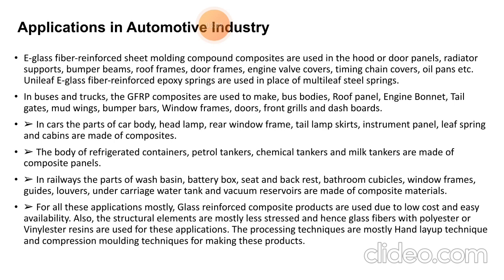In buses and trucks, GFRP composites are used to make bus bodies, roof panels, engine bonnets, tailgates, mud wings, bumper bars, window frames, doors, front grills, and dashboards.